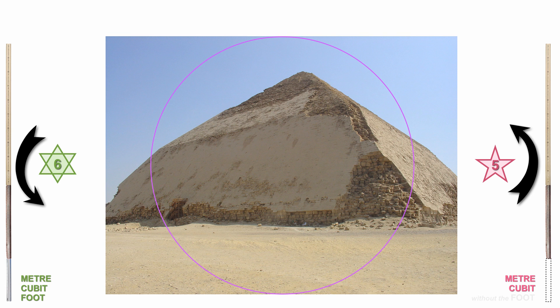One of my favorite examples of this intimate relationship is manifest in the bent pyramid at Dahshur, the only pyramid built to express two different angles, the very ones that define the pentagram and the hexagram.